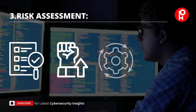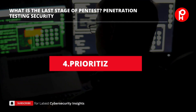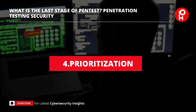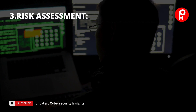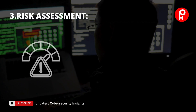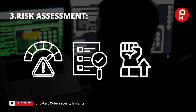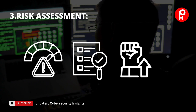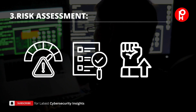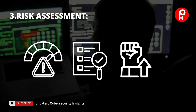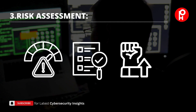Next is prioritization. Vulnerabilities are prioritized based on their severity, likelihood of exploitation, and potential impact. Critical and high-risk vulnerabilities are typically addressed first, followed by medium and low-risk issues.